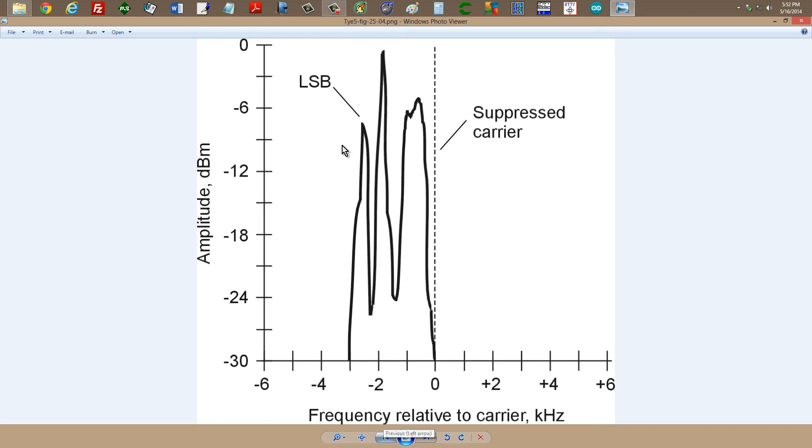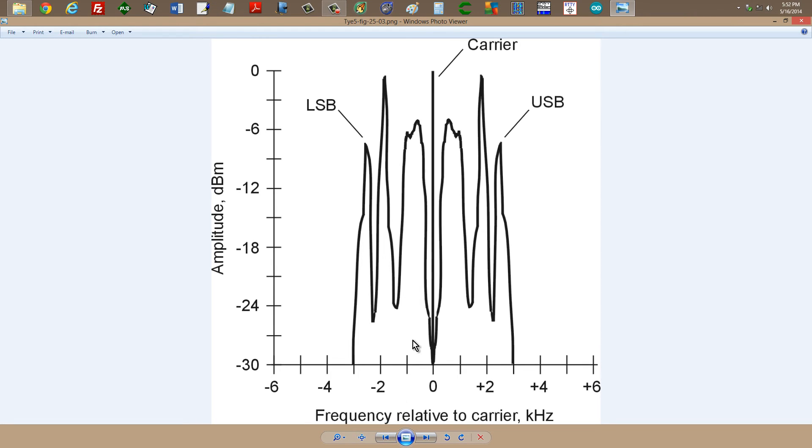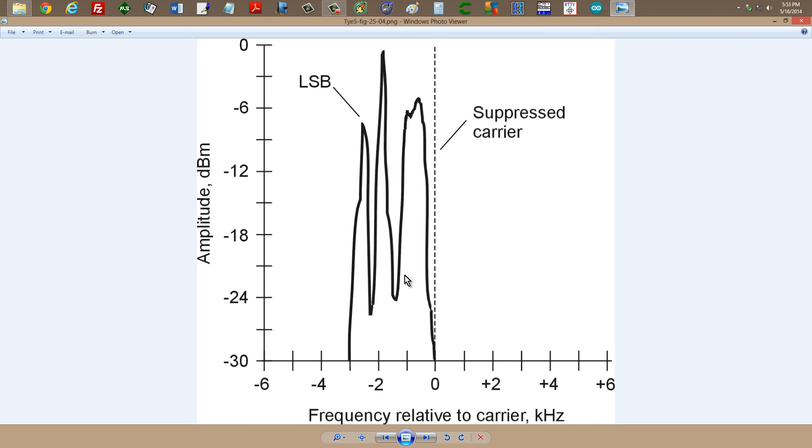So this signal, in this case a lower sideband SSB, single sideband, lower sideband signal with a suppressed carrier, only consumes about one sixth as much power as the original amplitude modulated signal did. The carrier consumes two thirds. Each one of these sidebands consumes one sixth for a total of six sixths. Did I say one third for each sideband? I meant one sixth, one third of the energy in both sidebands combined.